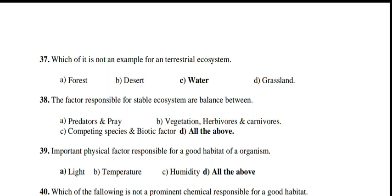Because forest, desert and grassland are all earth-related aspects, but water is not. The factors responsible for a stable ecosystem are a balance between predator and prey, vegetation and herbivores and carnivores, competing species and biotic factors — all of the above. Important physical factors responsible for a good habitat of an organism — all of the above.